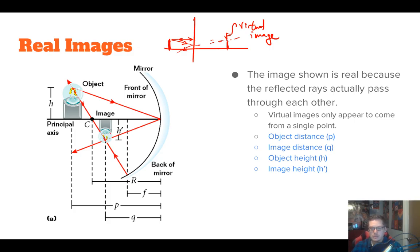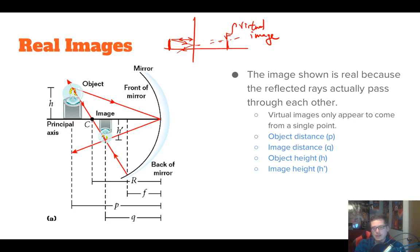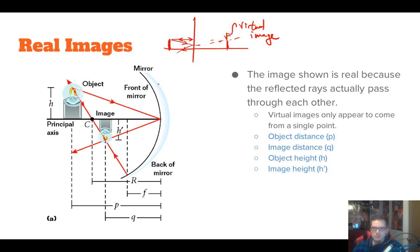Real images are really nice because we can actually project them onto a screen. For example, old school overhead projectors would take a transparency sheet, shine a light through it, and it would hit a concave mirror and project onto a screen behind you. Real images are arguably more useful than virtual images because we can project them, though they each have their uses.